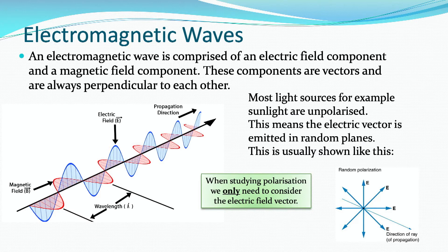Electromagnetic waves, as their name suggests, have an electric field component and a magnetic field component. These two components are vectors and they are always perpendicular to each other. Usually you'll see an electromagnetic wave drawn with your electric field vector shown as a blue sine wave and your magnetic field vector shown as a red sine wave. Most light sources — for example, sunlight — are unpolarized. What that means is the vectors are emitted in random planes, which is usually shown in a diagram. If you imagine that the light wave vectors are two-dimensional sine waves, those sine waves can have any orientation. When we study polarization of light, we only consider the electric field vector. In unpolarized light, the electric field vector — that two-dimensional sine wave — is emitted in random planes.